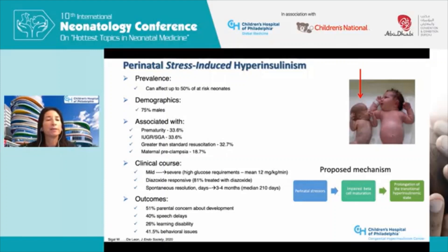However, outcomes in these babies can be as poor as those with congenital forms of hyperinsulinism. In our series of over 100 babies with perinatal stress-induced hyperinsulinism, about half of the parents expressed concern about development: 40% had speech delays, 26% had learning disabilities, and 41% had behavioral issues.